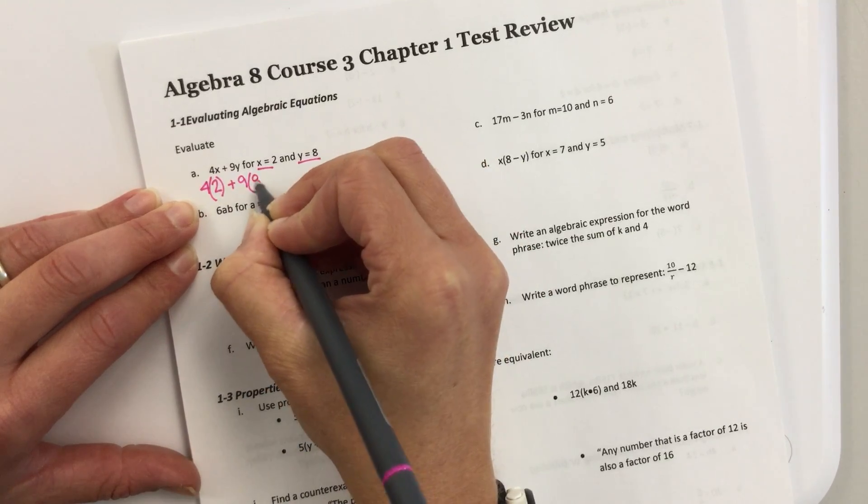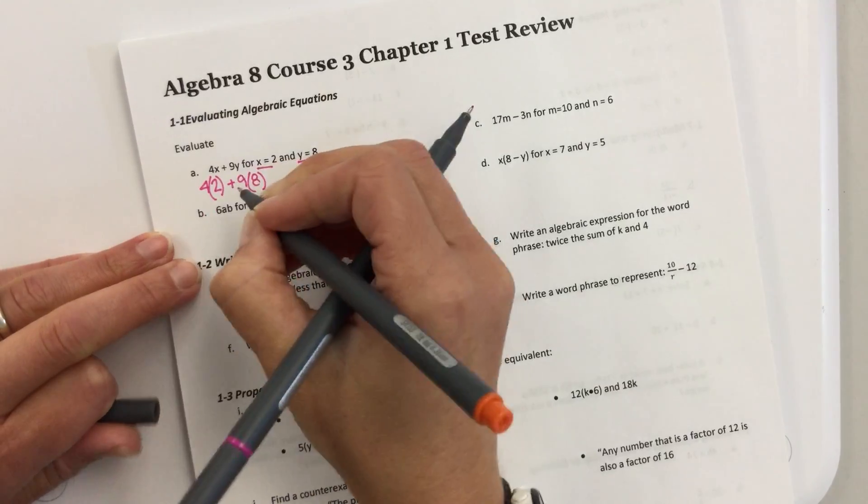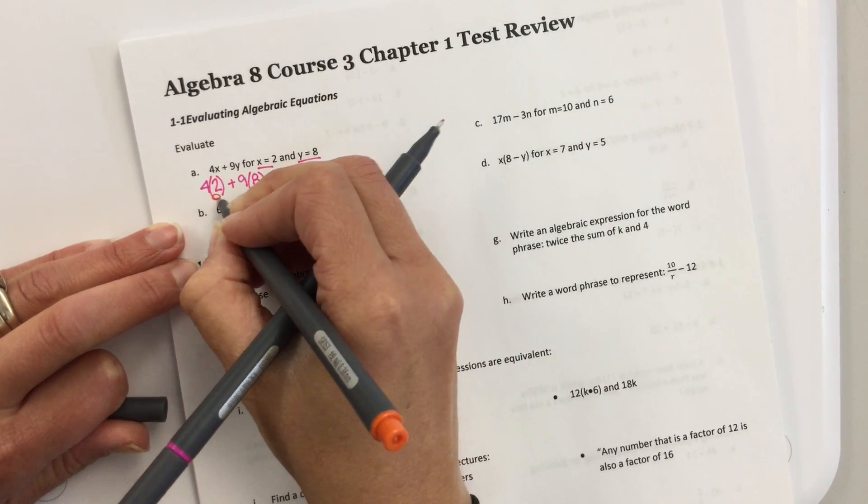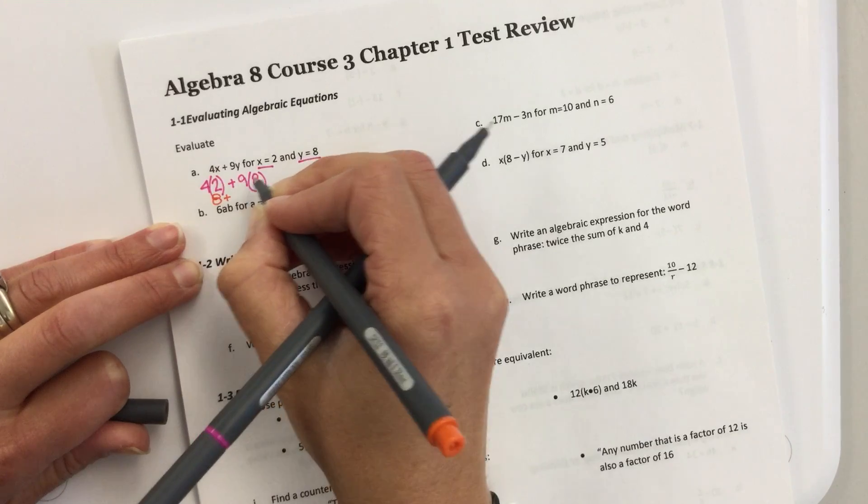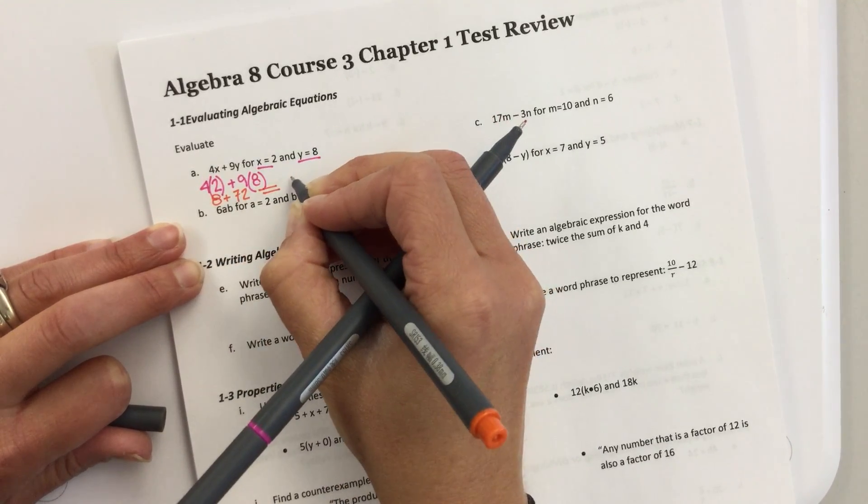9 times y is 9 times 8. Then, you have to multiply before you can add. So, 4 times 2 is 8. 9 times 8 is 72. You add those together, and what do we get? 80.